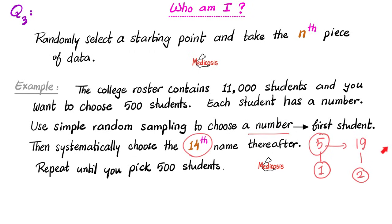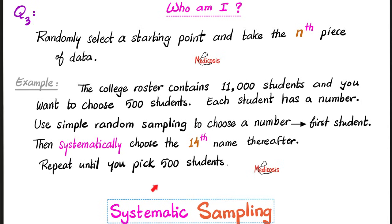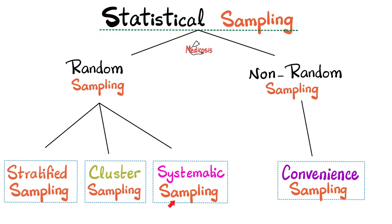Then another 14 after that — 19 plus 14 is 33, so the 33rd student is the third member of our sample. You keep repeating this until you pick your 500 students. This is systematic sampling, because we are systematically choosing every 14th name after the first student, who was chosen randomly. Systematic sampling is a subtype of random sampling.